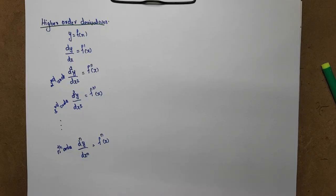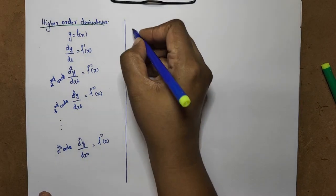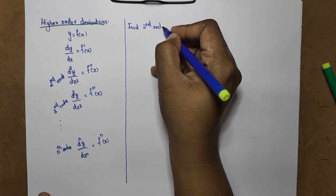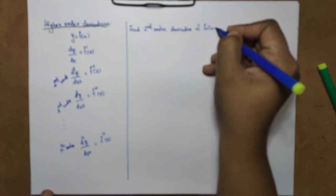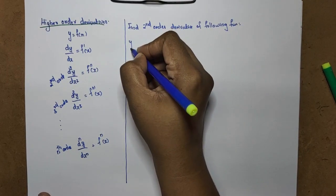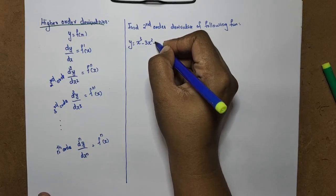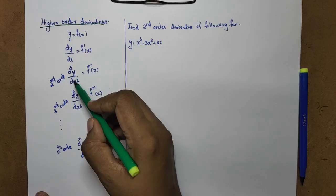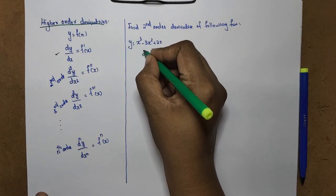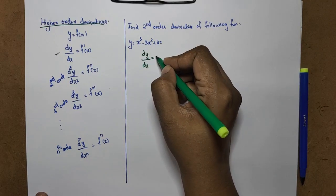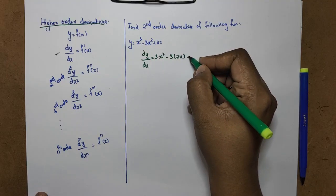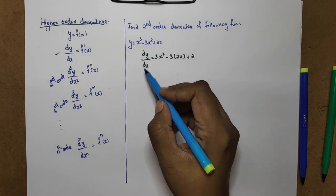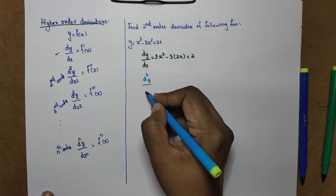The higher-order derivative is a little bit of a problem. I am going to find the second-order derivative of the following function. First question: y is equal to x³ minus 3x² plus 2x. To find d²y/dx², first we find dy/dx by differentiating.